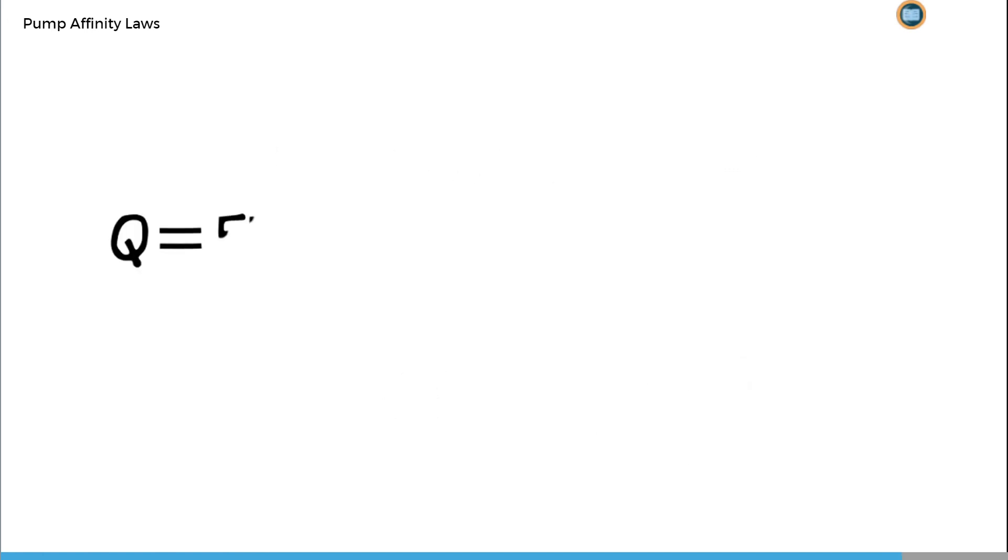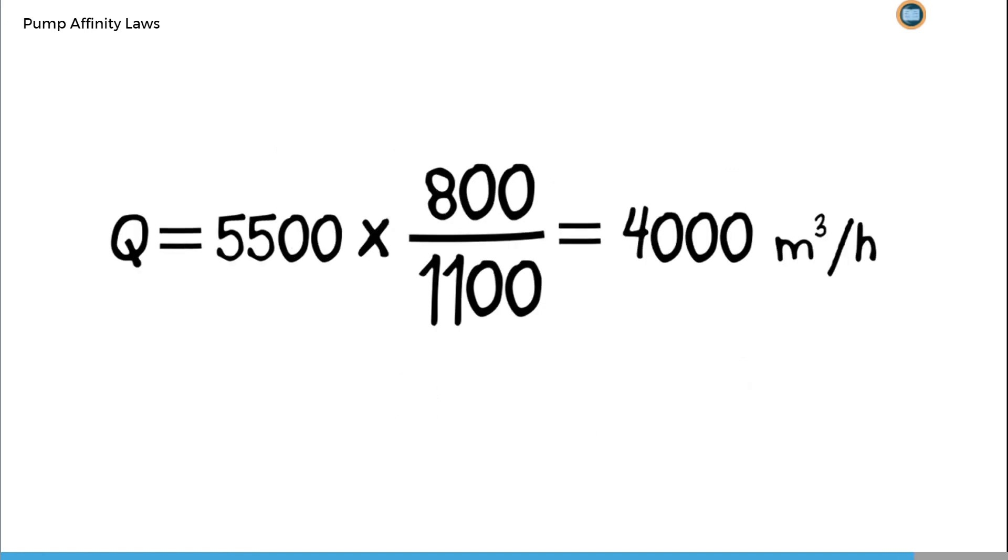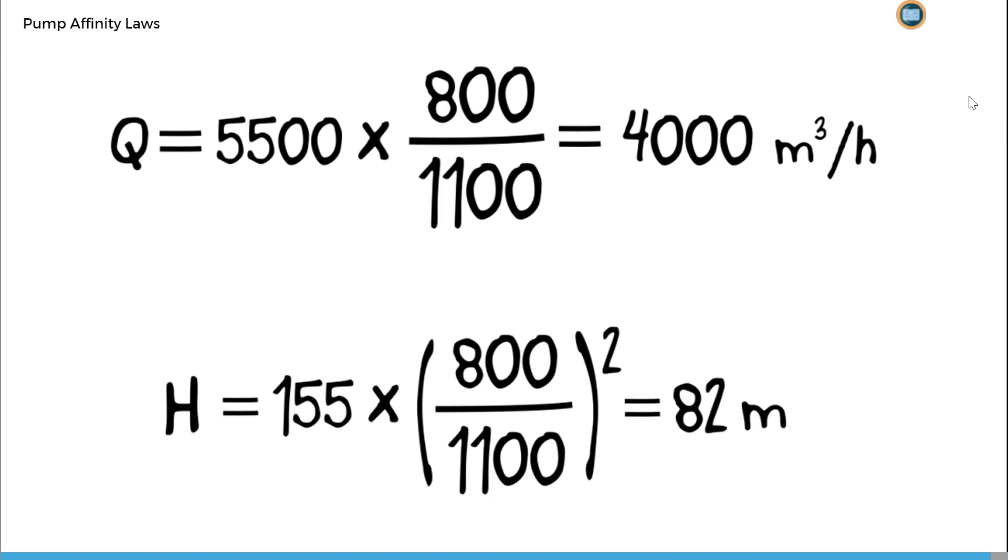If we now calculate the flow rate using these expressions for a rotational speed of 800 revolutions per minute, this gives us a flow rate, Q, of 4000 m³ per hour, and a head, H, of 82 m.